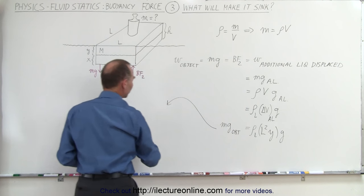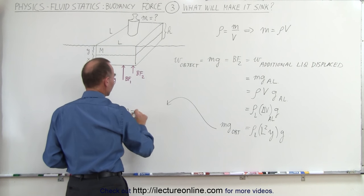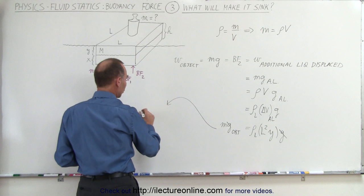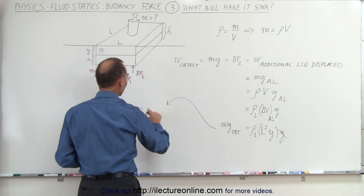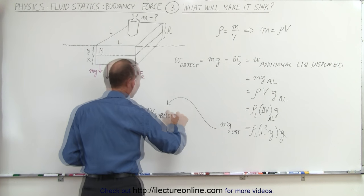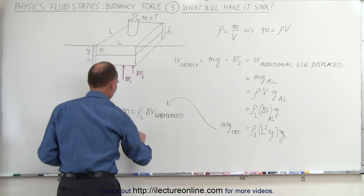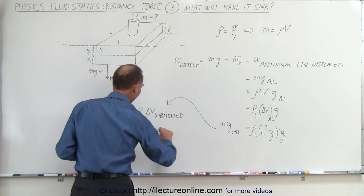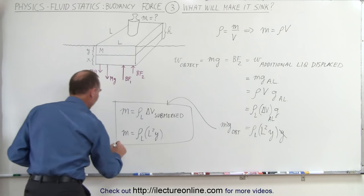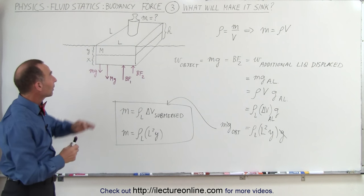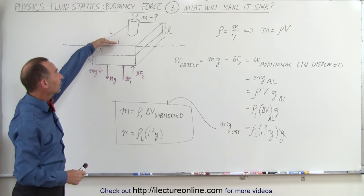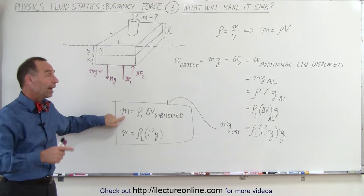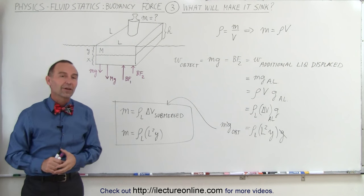Finally, we solve for m. The g's cancel out on both sides, so m equals the density of the liquid times the additional volume submerged — or written out, the density of the liquid times l² times y. That is how you find how much additional mass placed on top is required to get the object to the point where it's just about to sink. Any additional mass beyond that will push the object below the surface and make it sink. And that's how it's done.